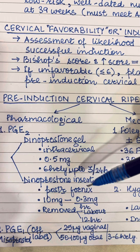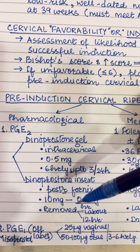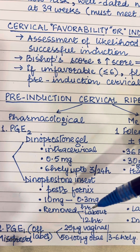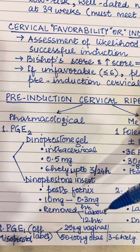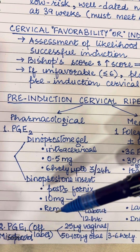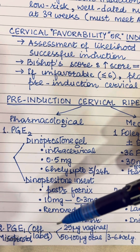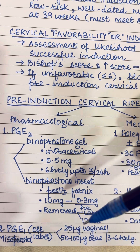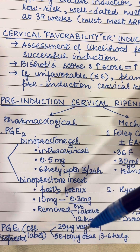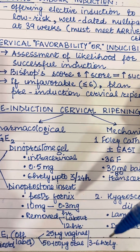The insert is placed in the posterior fornix. It has a dosage of 10 mg which releases 0.3 mg per hour, and it is removed once the patient goes into labor or after 12 hours. PGE1 or misoprostol is used as an off-label agent in a dosage of 25 mcg vaginally or 50 to 100 mcg orally every 3 to 6 hours.